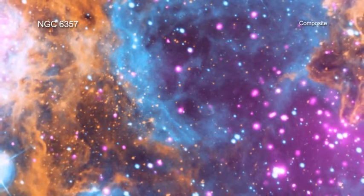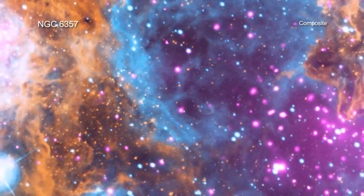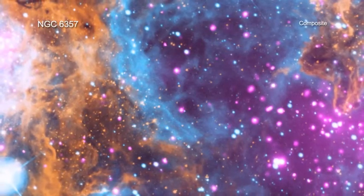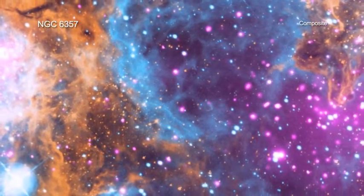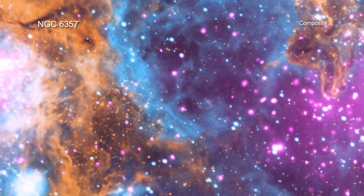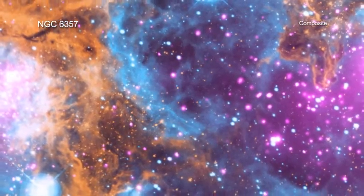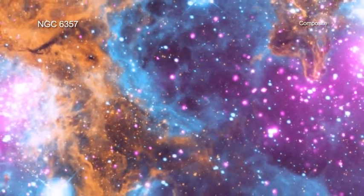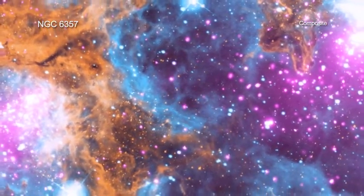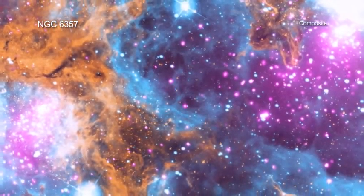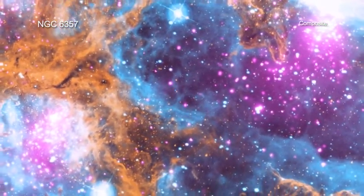Although there are no seasons in space, this cosmic vista invokes thoughts of a frosty winter landscape. It is, in fact, a region called NGC 6357, where radiation from hot young stars is energizing the cooler gas in the cloud that surrounds them.